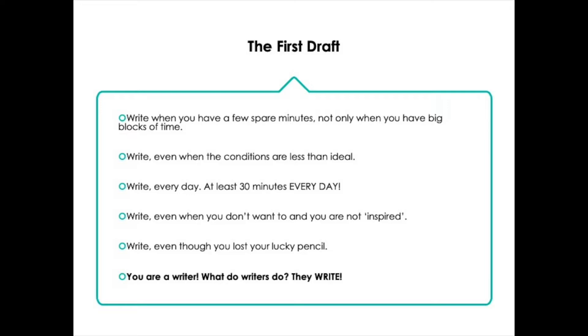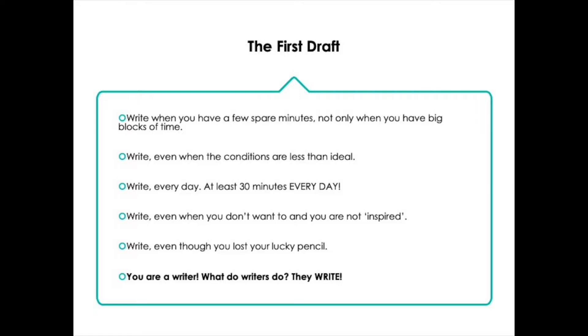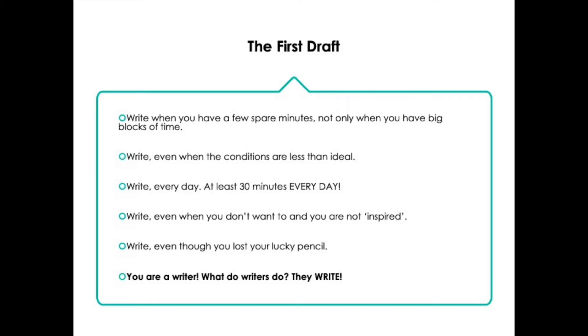Some more productivity tips for writing the first draft: make sure that you write when you have a few spare minutes. If you have 10 or 15 minutes between classes or meetings, you can get a lot of work done in that small amount of time. All you have to do is sit down and start writing. Don't wait until you have a three or four hour block of time, because that's not going to happen very often. It's really important that you be able to start writing on command and write even when conditions are not ideal. Write consistently — I suggest every day for 30 minutes, at least during the week. Make that a key priority.